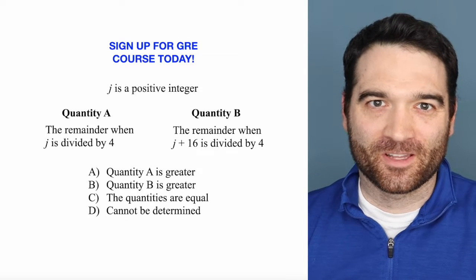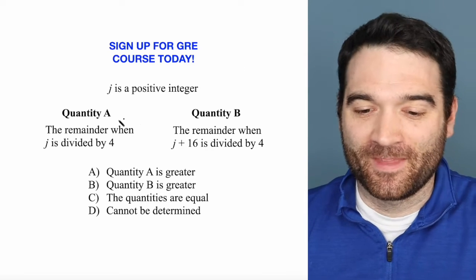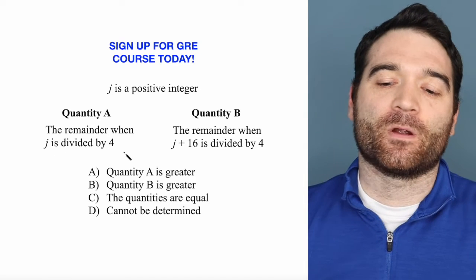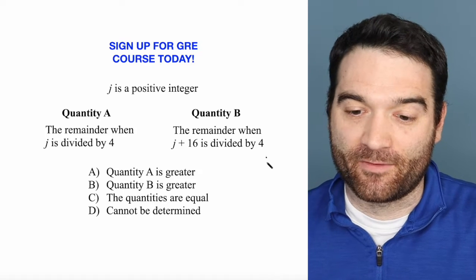Here's a GRE algebra question. Let's take a look. J is a positive integer. That's pretty vague. So we want to know what's greater, the remainder when J is divided by 4 or the remainder when J plus 16 is divided by 4.